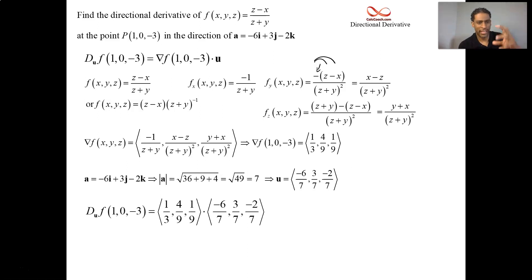You have the calculation for the slope of the surface at that point in that direction. You get negative 6 over 21, 12 over 63, negative 2 over 63. That negative 6 over 21, you can make it over 63 as well by multiplying top and bottom by 3. So negative 18 plus 12 minus 2 all over 63 turns out to be negative 8 over 63. Good work.